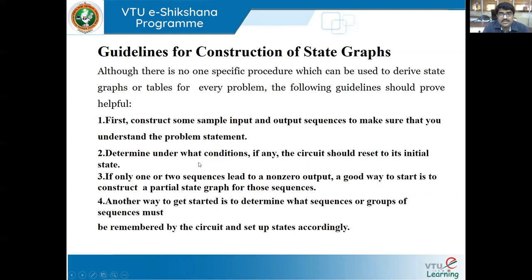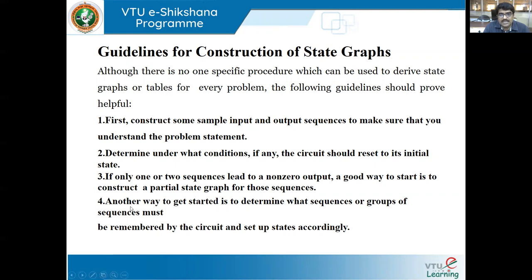The third guideline: if only one or two sequences lead to a non-zero output, a good way to start is to construct a partial state graph for those sequences. Start from one minimum partial state graph, then build on that, and finally complete the state graph. The fourth guideline: another way to get started is to determine what sequences or groups of sequences must be remembered by the circuit and set up states accordingly.